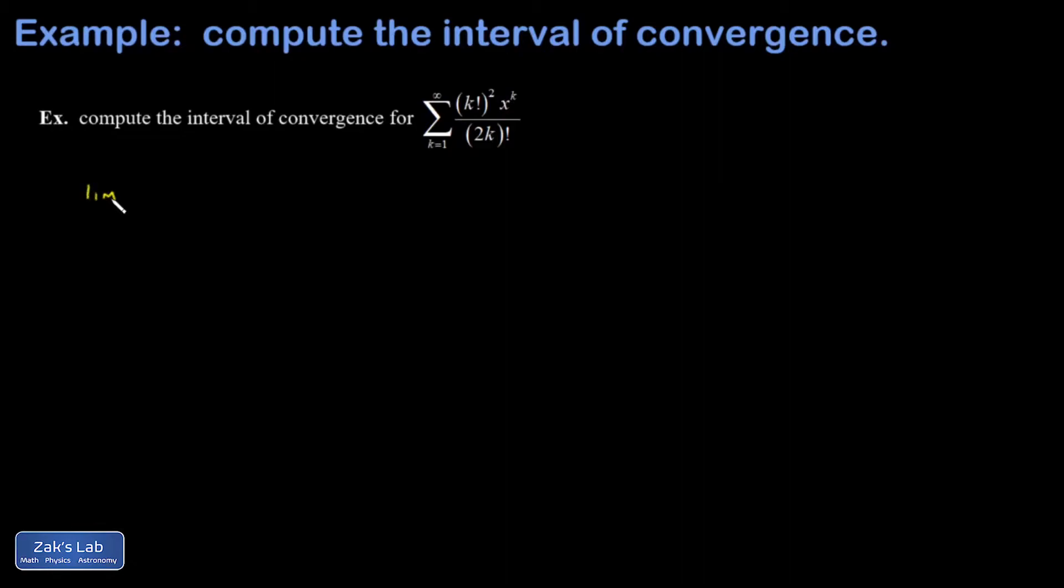So I'm going to look at the limit as k goes to infinity of the absolute value of the next term divided by the previous term, so a_(k+1) divided by a_k. When that limit goes to a number less than 1, you have a convergent series, and that will give us a condition on x.